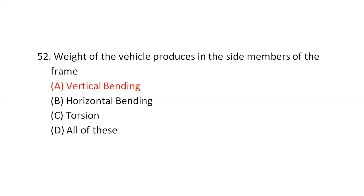The weight of the vehicle produces a vertical load on the side members of the frame — vertical bending downward. Option A.